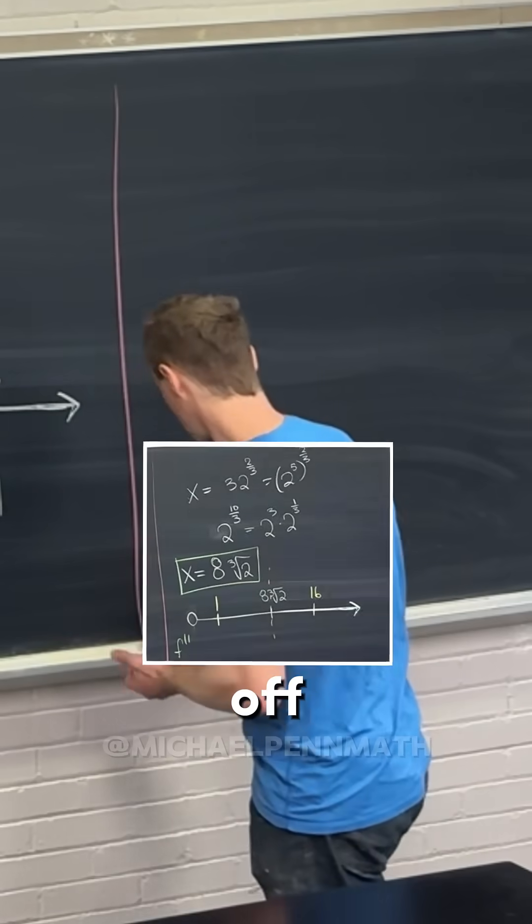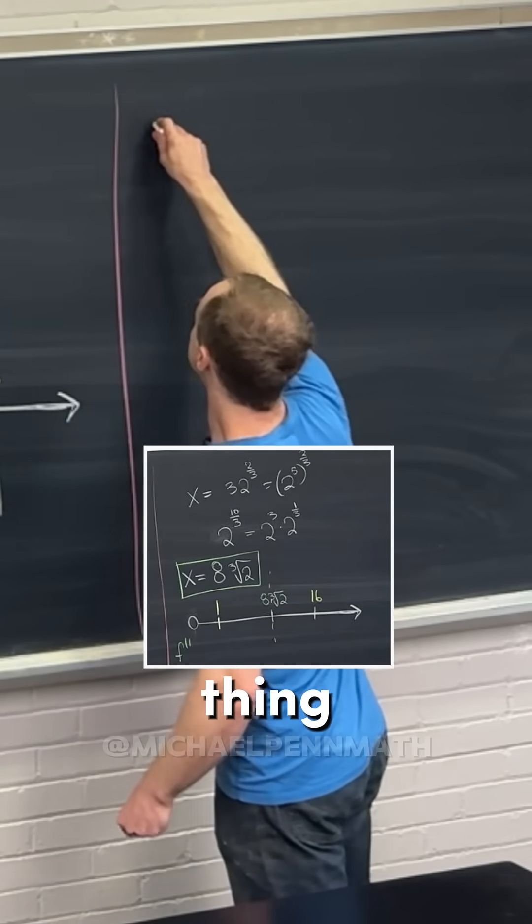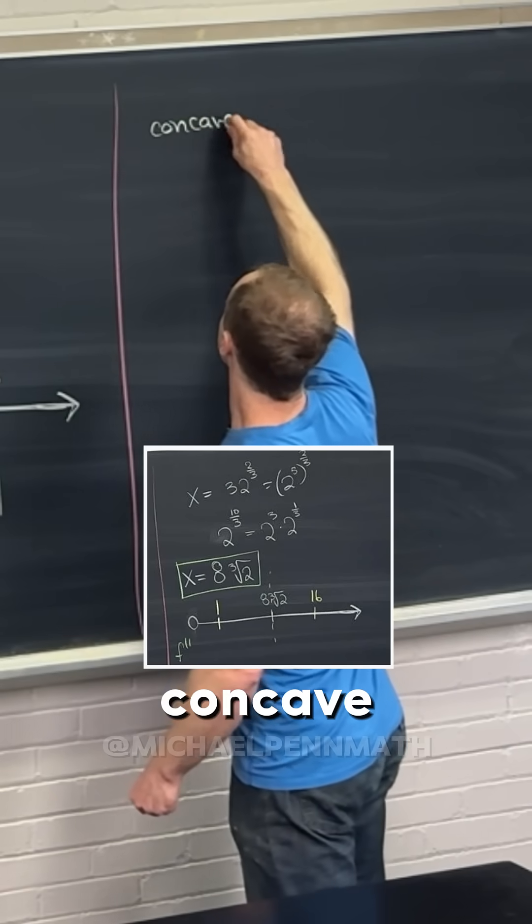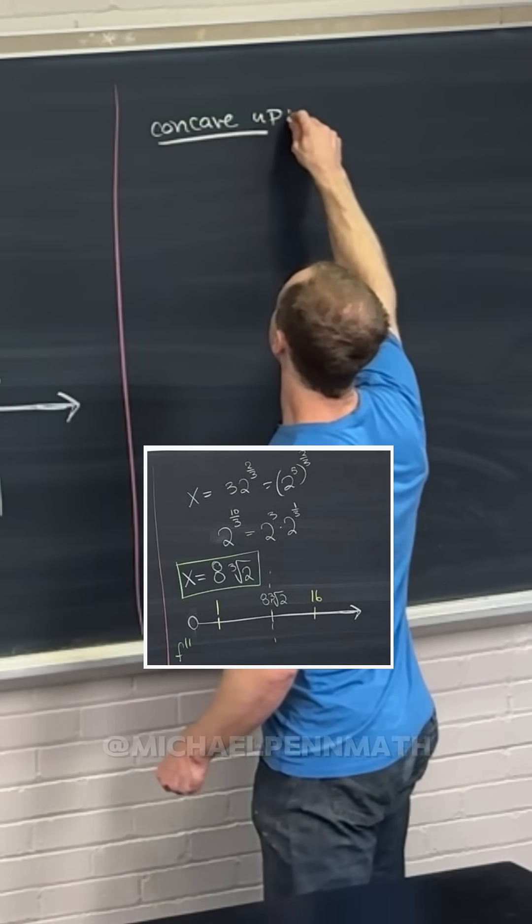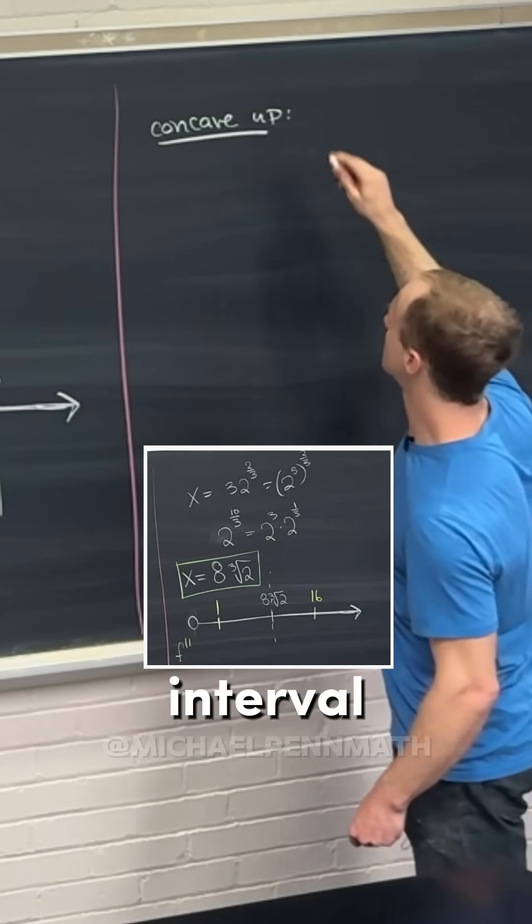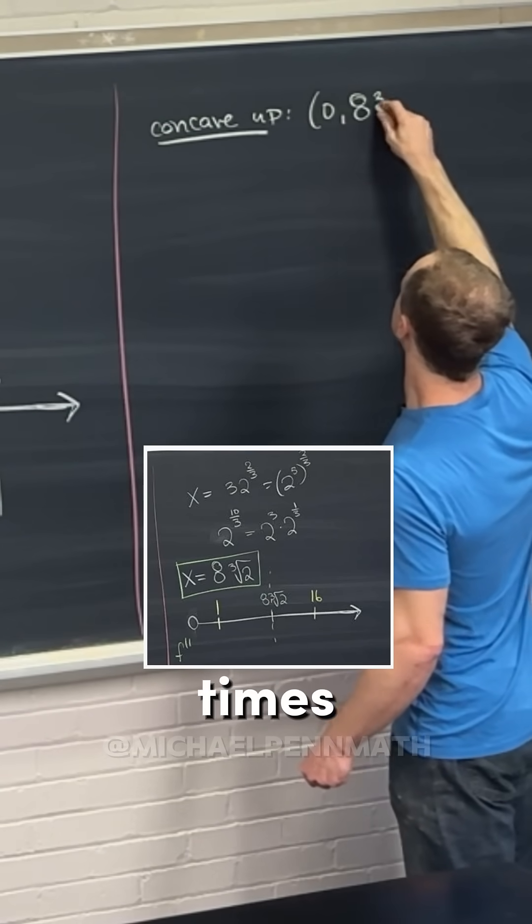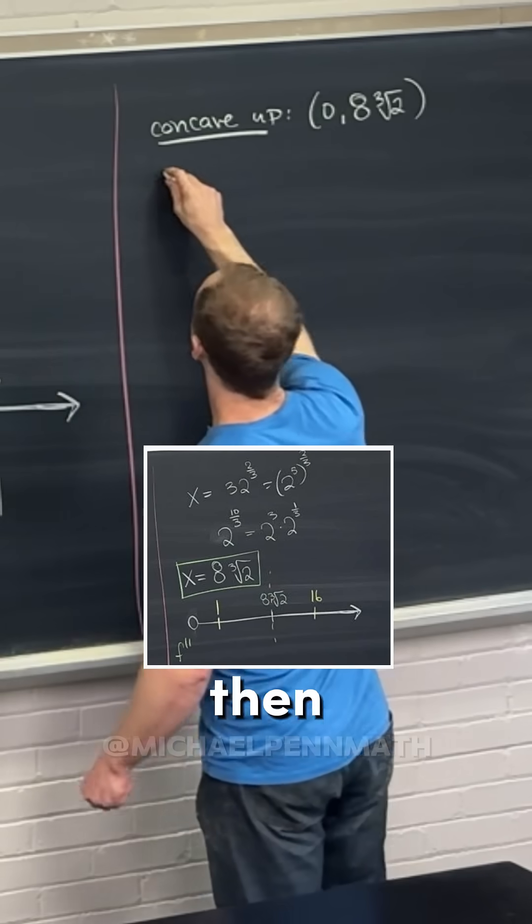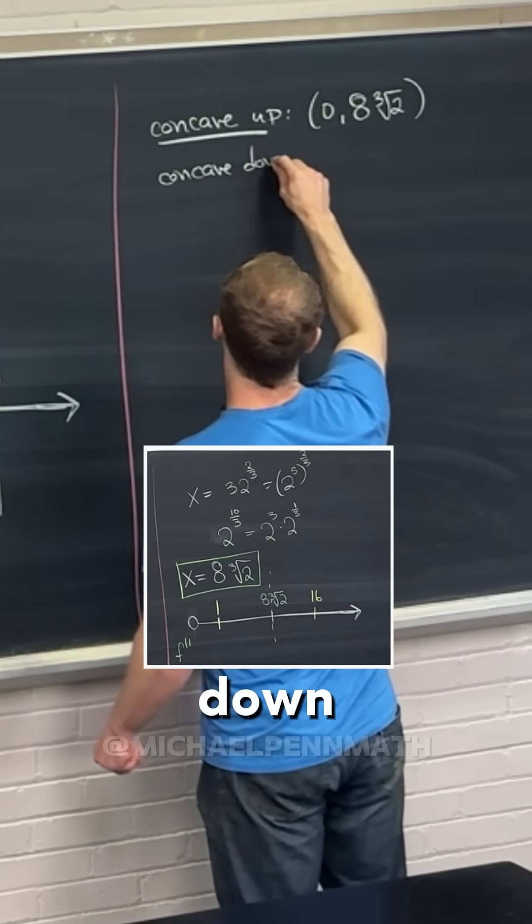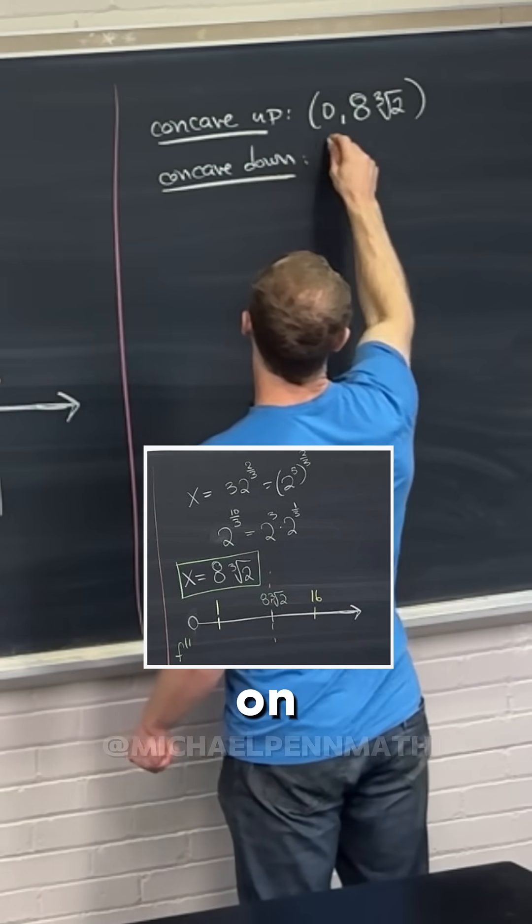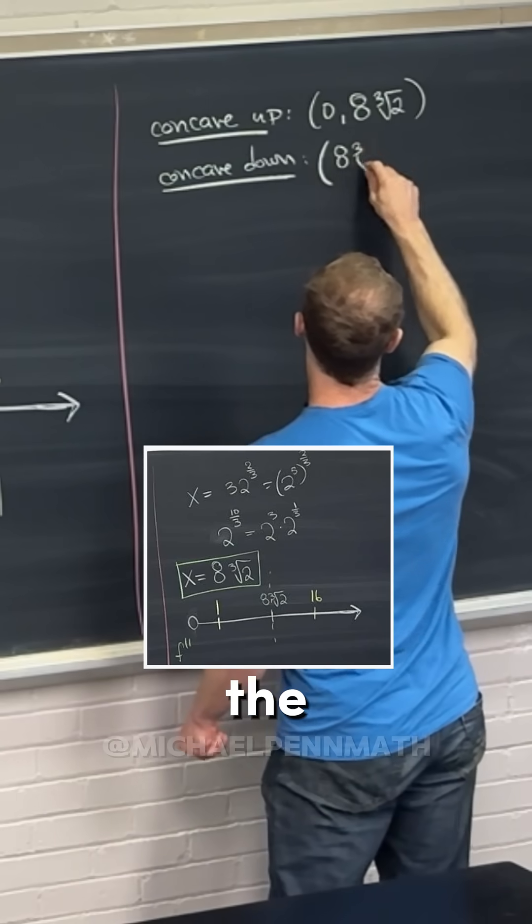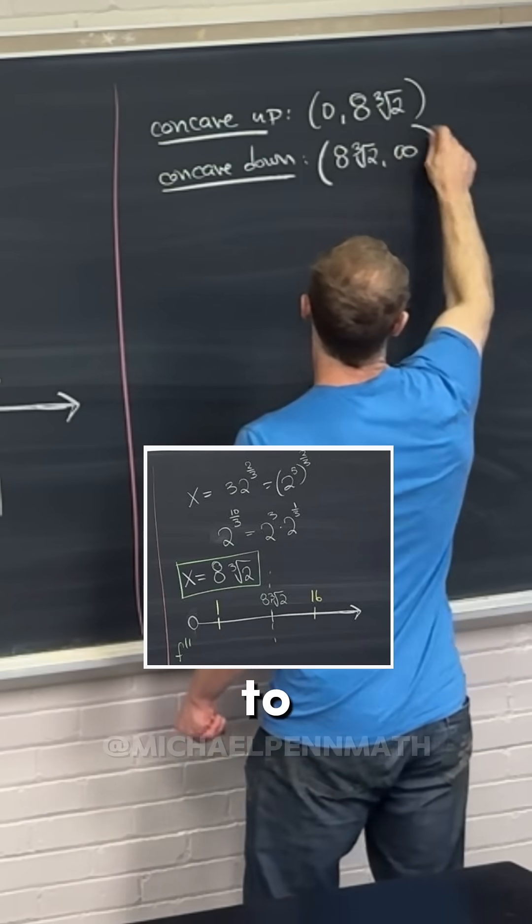And what we have is that this thing is concave up on the interval from 0 to 8 times the cube root of 2, and then it's concave down on the interval from 8 times the cube root of 2 to infinity.